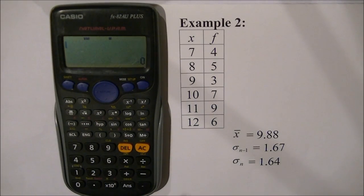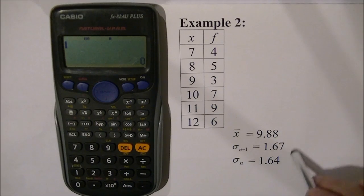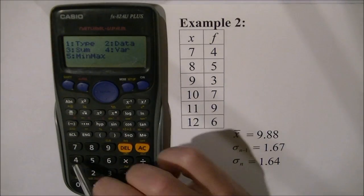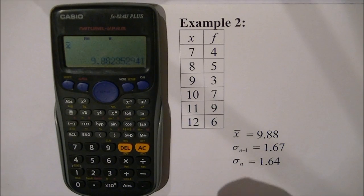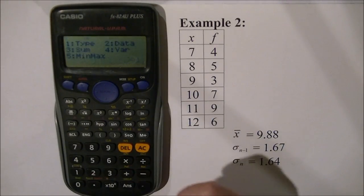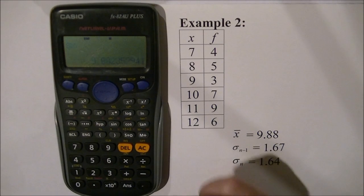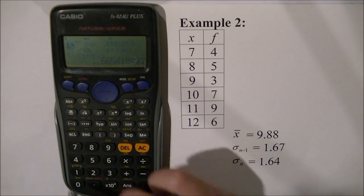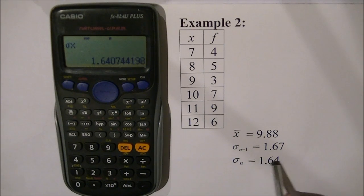I press AC to clear the input, then access the statistics menu. I press shift, stat, and go to variation four. I press two for the mean, equals, and get the answer 9.88. For the sample deviation I press shift, stat, four, four, equals and get approximately 1.67. Finally for the population deviation I press shift, one, four, three, equals and get approximately 1.64.